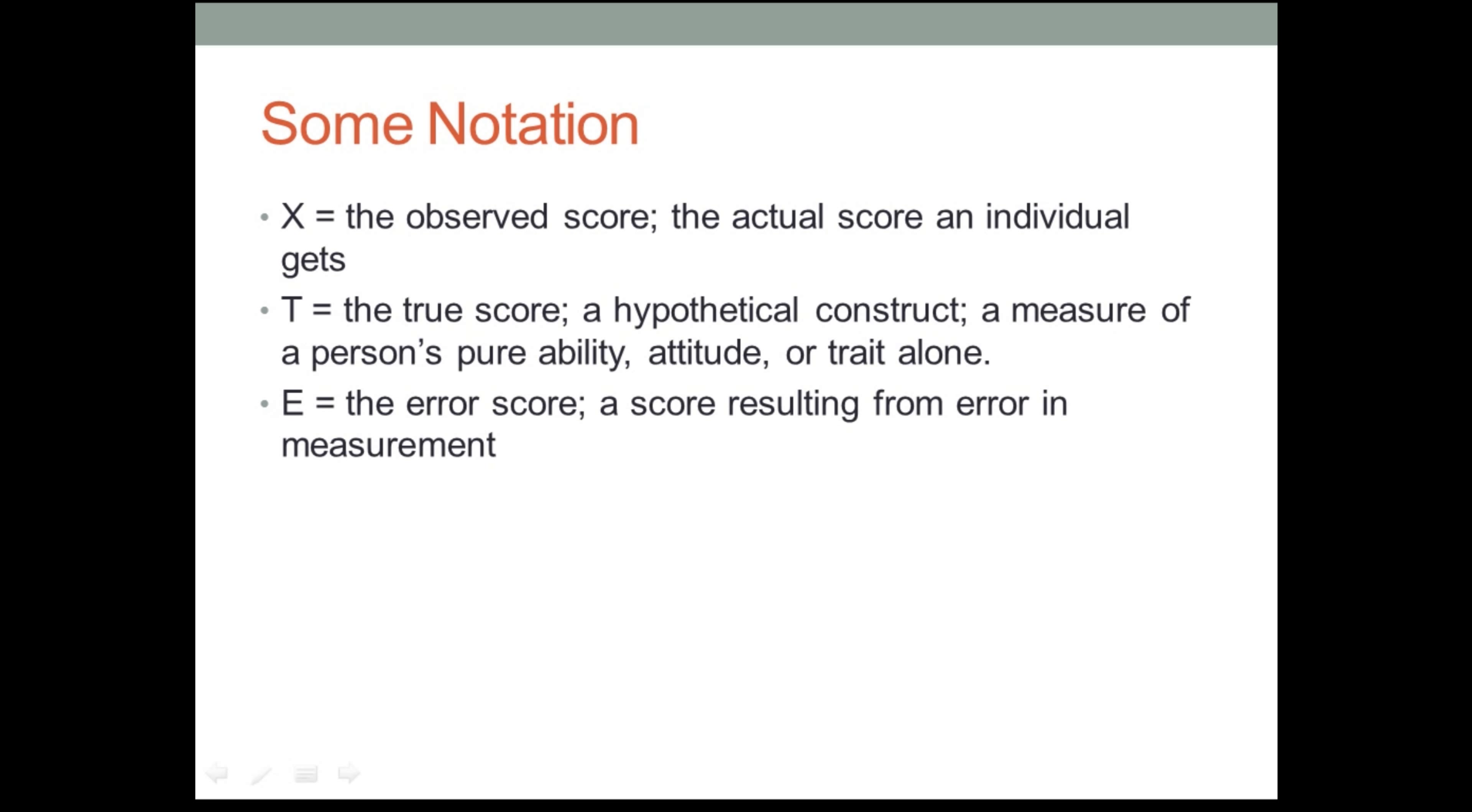Okay, so if I take a test and I get 90 at the test, that's my X. It's my observed score. But now let's look at this second symbol, T. Now that's something you haven't seen before in statistics, presumably, at least not standing for this. T stands for a true score. And a true score is a hypothetical construct. It's a measure of a person's pure ability, or their actual attitude, or their special trait.